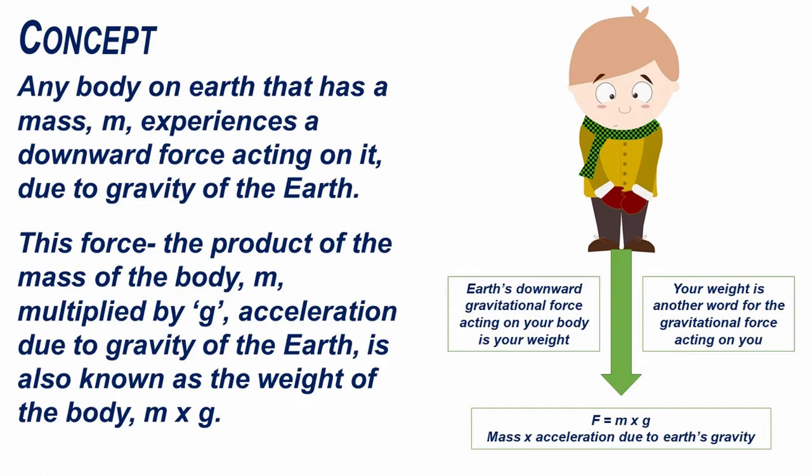Any body on earth that has a mass m experiences a downward force acting on it due to the gravity of the earth. This force — the product of the mass of the body multiplied by g, which is acceleration due to gravity of the earth — is also known as the weight of the body, m times g. Your weight is another word for the gravitational force acting on you.